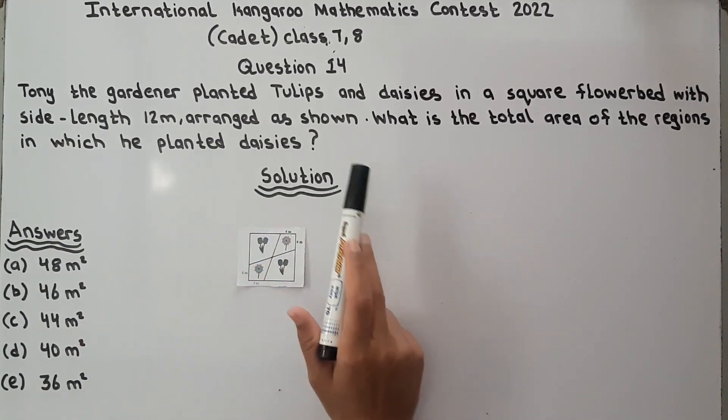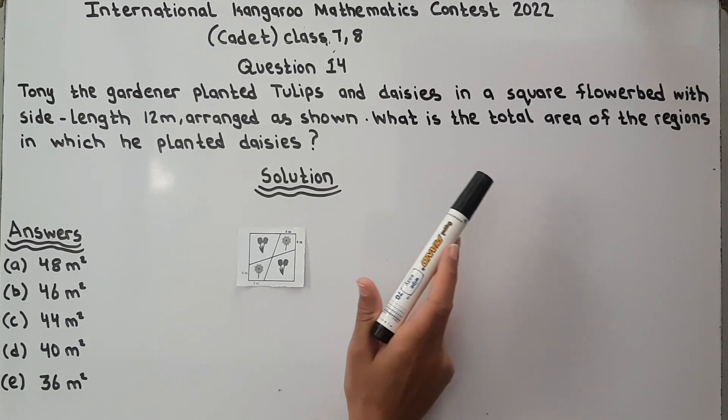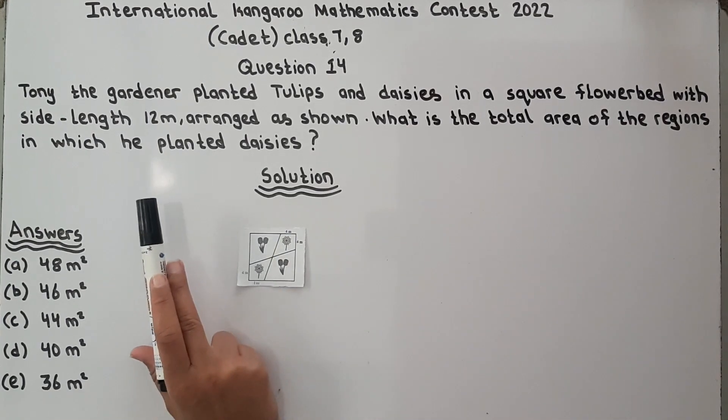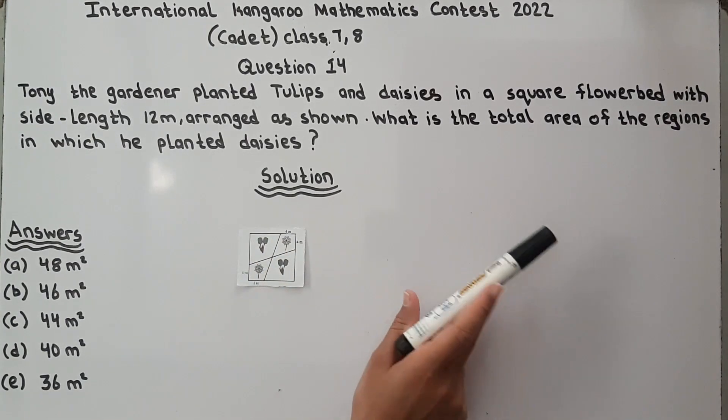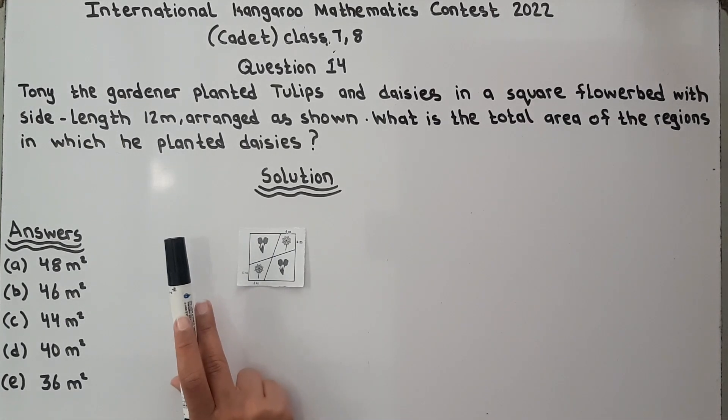Tony the gardener planted tulips and daisies in a square flower bed with side length 12 meters, arranged as shown. What is the total area of the region in which he planted daisies?